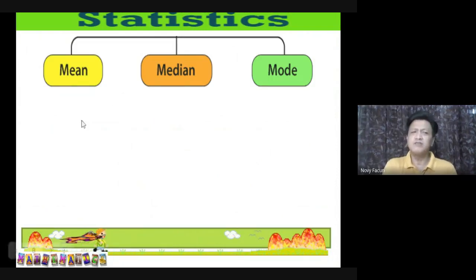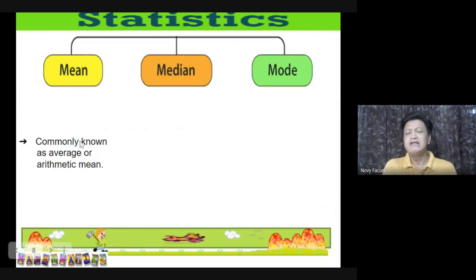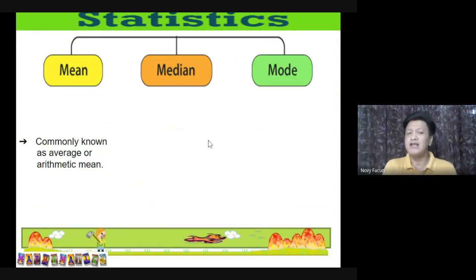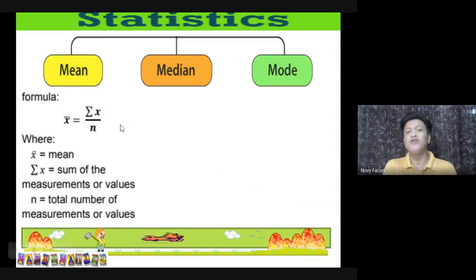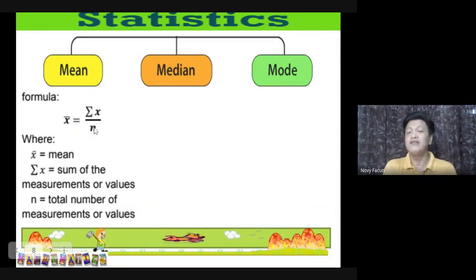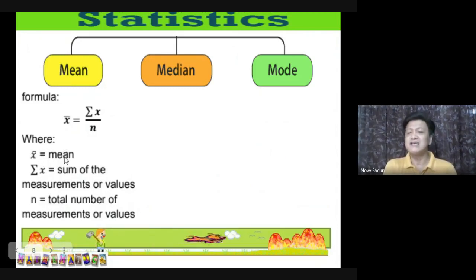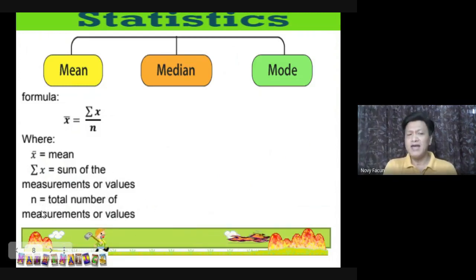So let's define the difference between mean, median, and mode. When we say mean, this is commonly known as the average or arithmetic mean. To find it, get the sum of every value divided by the number of values in the data set. The formula for ungrouped data is: x̄ = Σx / n, where Σx means the sum of all measurements or values, and n is the total number of measurements or values.